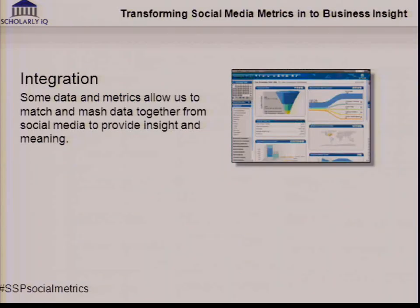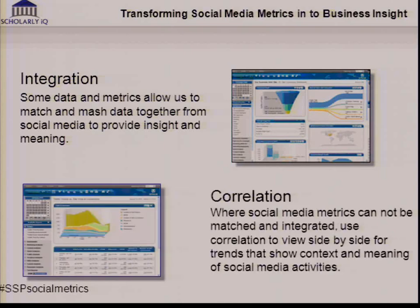Typically we've got two ways of doing it. One is integration — data allows us to link a user, a group, an activity directly through to something online or to revenue, so we can extend the funnel and see a direct correlation. The second is correlation — we can't directly integrate it, but by looking at things side by side, if Twitter activity goes up and then full-text downloads increase correspondingly after that period, I can infer that Twitter has had an effect.